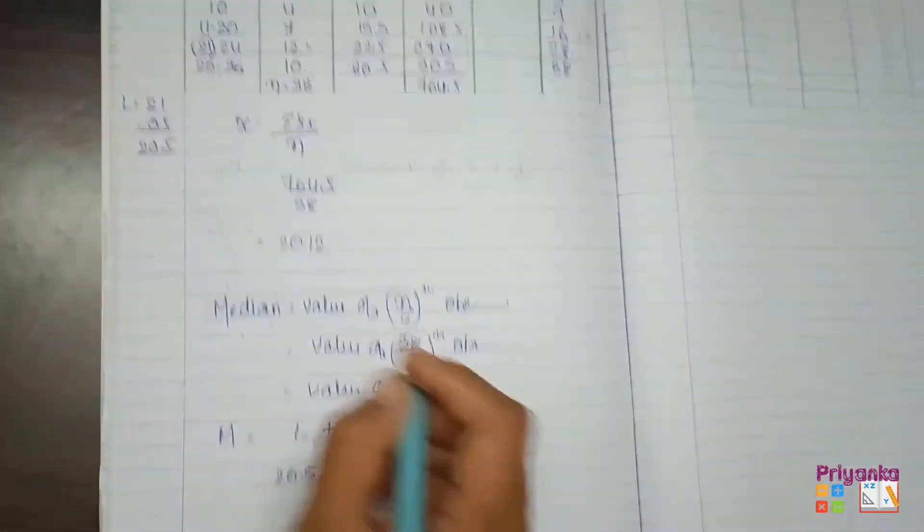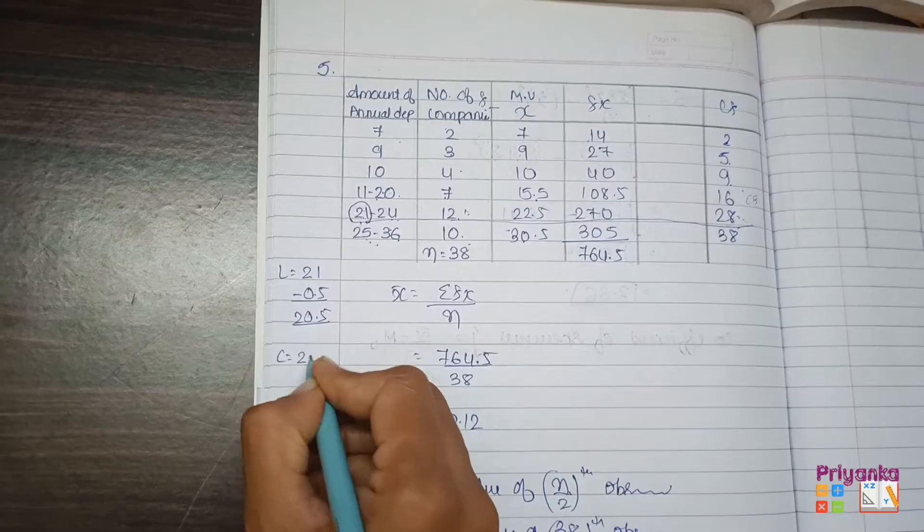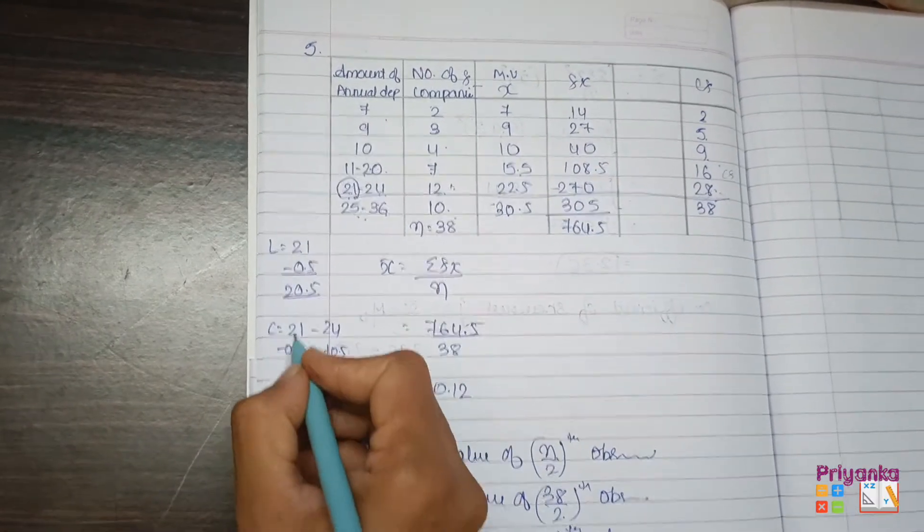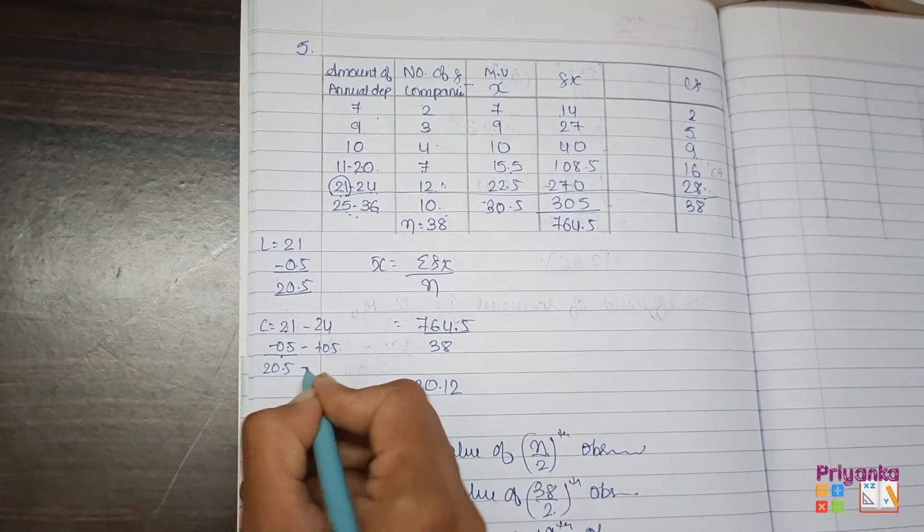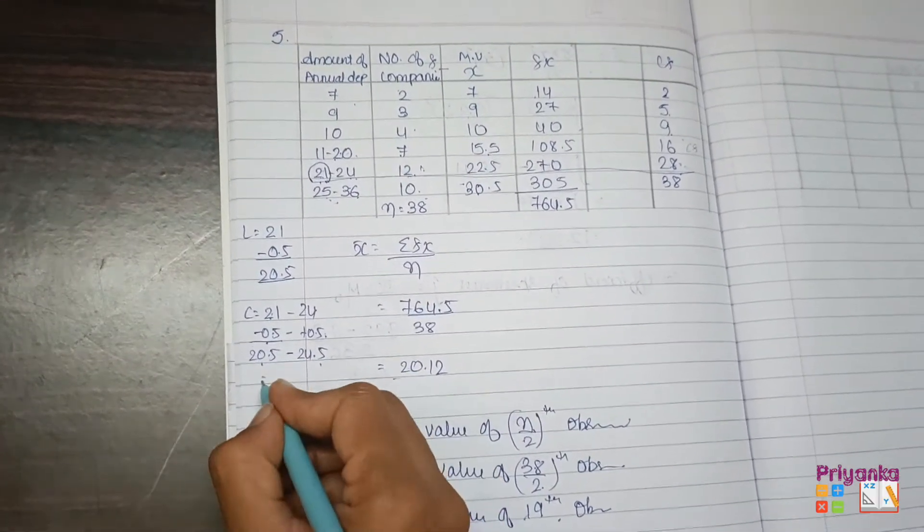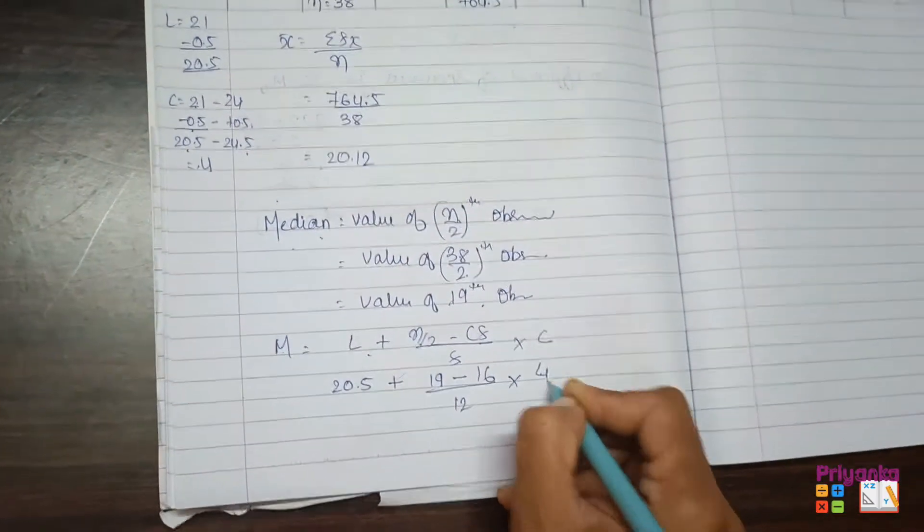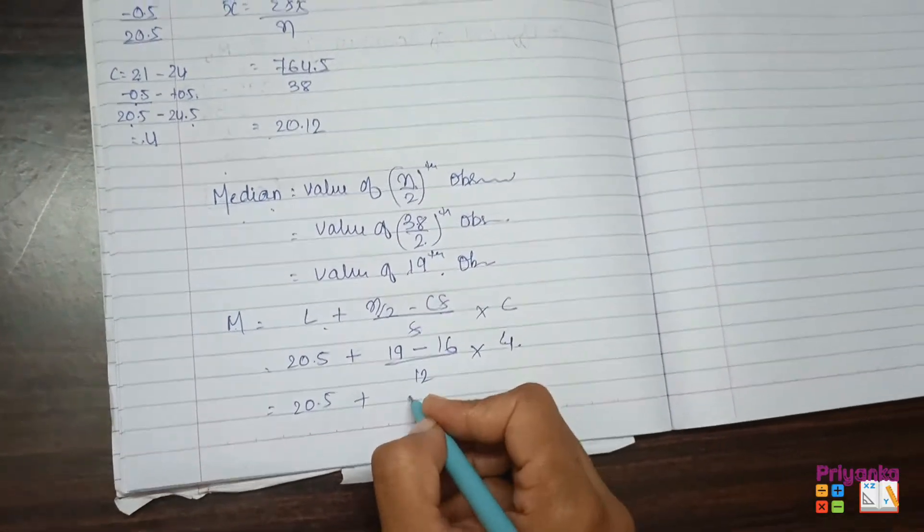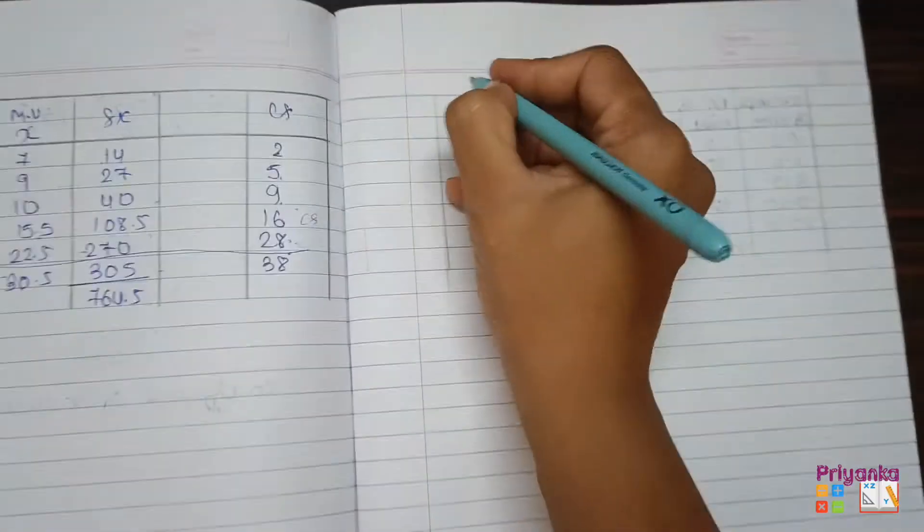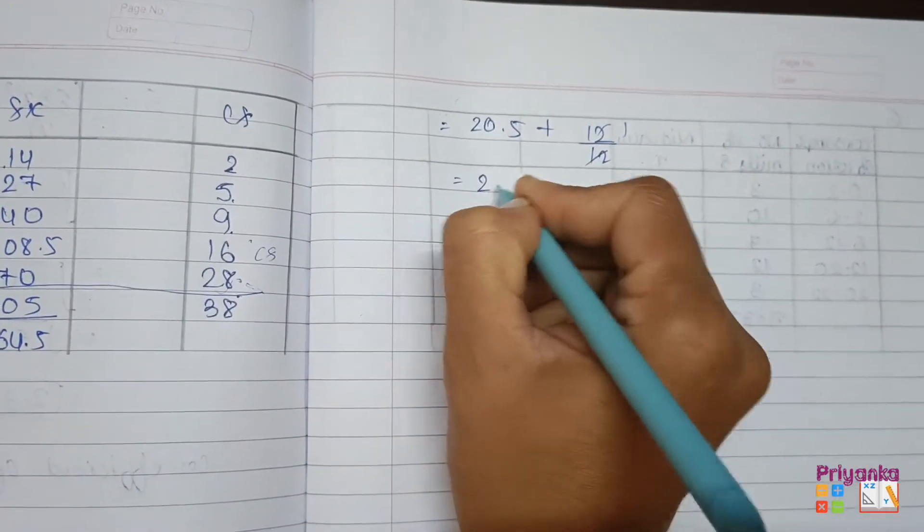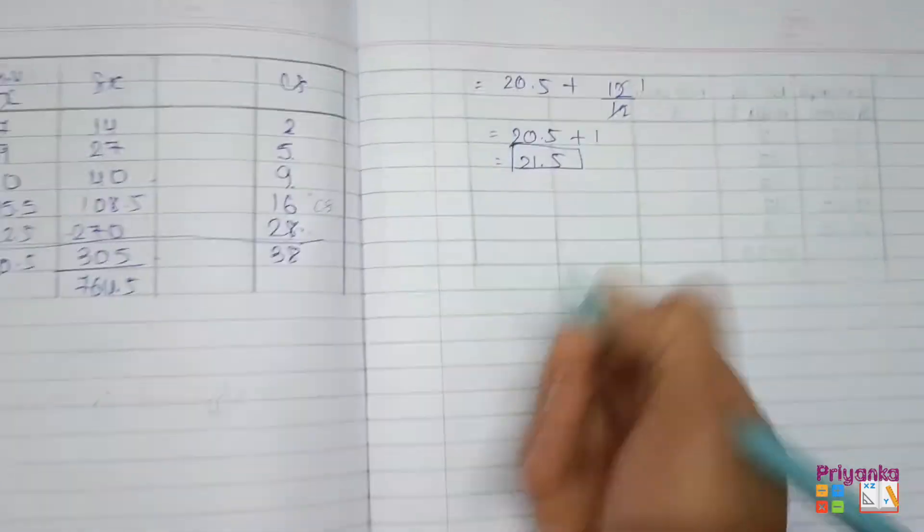So 20.5 plus (19 minus 16) divided by 12 into c. For c, since inclusive class: 21 minus 0.5 equals 20.5, and 24 plus 0.5 equals 24.5. So 24.5 minus 20.5 equals 4. That's class length. 20.5 plus (19 minus 16 equals 3) divided by 12 into 4. 20.5 plus 3×4 divided by 12. 12 divided by 12 equals 1. So 20.5 plus 1 equals 21.5. That's the median.